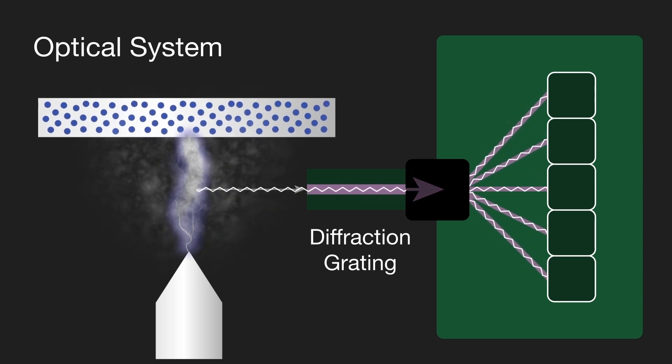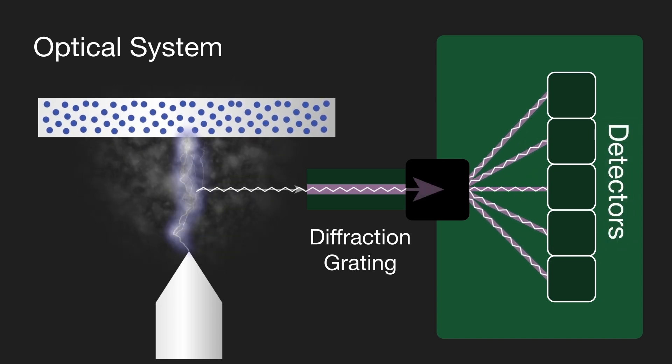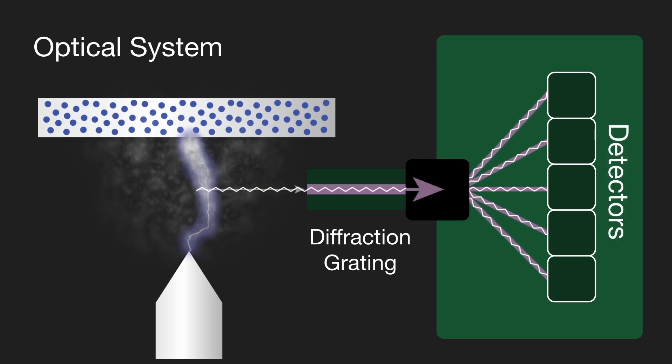A diffraction grating in the spectrometer separates the incoming light into an element-specific wavelength and a corresponding detector measures the intensity of light for each wavelength. The intensity measured is proportional to the concentration of the element in the sample.